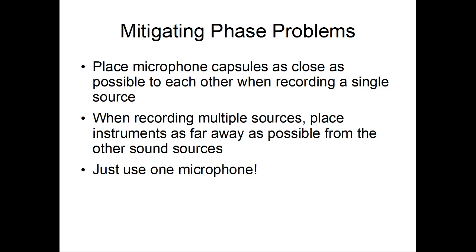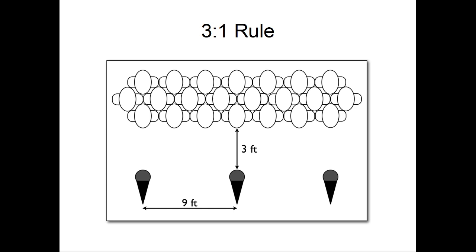The absolute best way to have no phase problems: just use one microphone. You have to worry about comb filtering, but if you just use one microphone on a guitar amp, there's nothing else to combine, so therefore you have no phase problems. There are reasons for using multiple mics, which will become fairly obvious when we start listening to the Pro Tools example. One thing I also want to go over since we're talking about micing is the three-to-one rule.